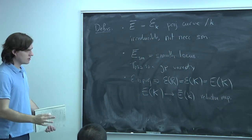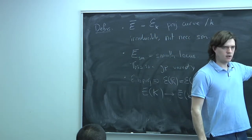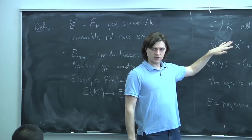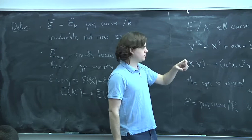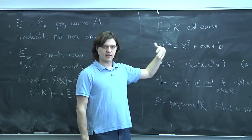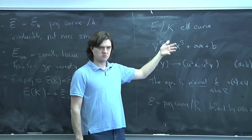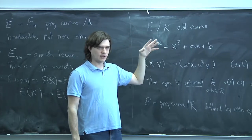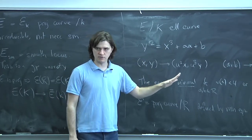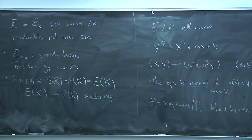Concretely, if you have a K-point, you use the projective equation — put z's in to make it homogeneous. Then scale out the denominators to make x, y, z all in R, and reduce them modulo the maximal ideal using the map on the residue field.